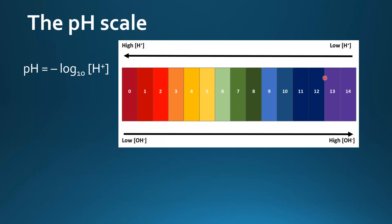Here we have the pH scale. We have numbers ranging from 0 to 14 and each number is given its own color.